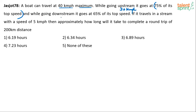And while going downstream, it goes at 65% of its top speed. What is 65% of top speed? Top speed is 40. 65% of 40 should be 26 km per hour. 60% is 24, 5% is 2, so 24 plus 2 is 26 km per hour.